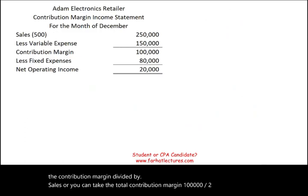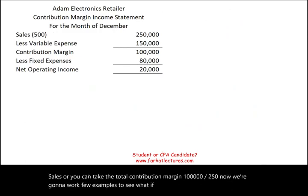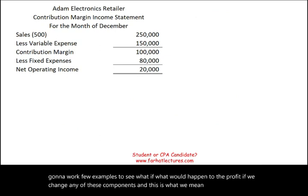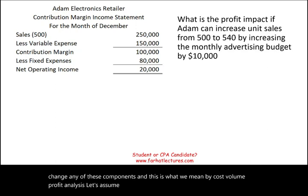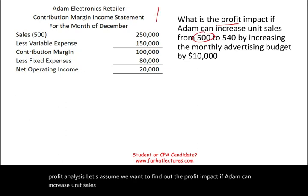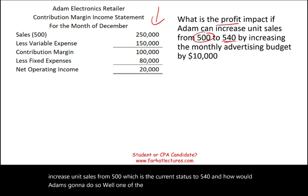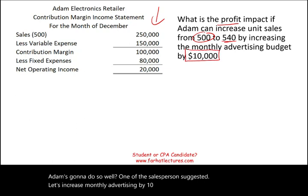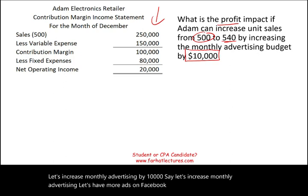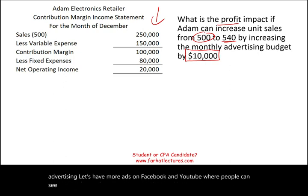We'll work a few what-if examples to see what would happen to profit if we change any of these components — this is what we mean by cost volume profit analysis. Let's assume Adam wants to increase unit sales from 500 to 540. A salesperson suggested increasing monthly advertising by $10,000 — more ads on Facebook and YouTube — expecting sales to increase by 40 units.